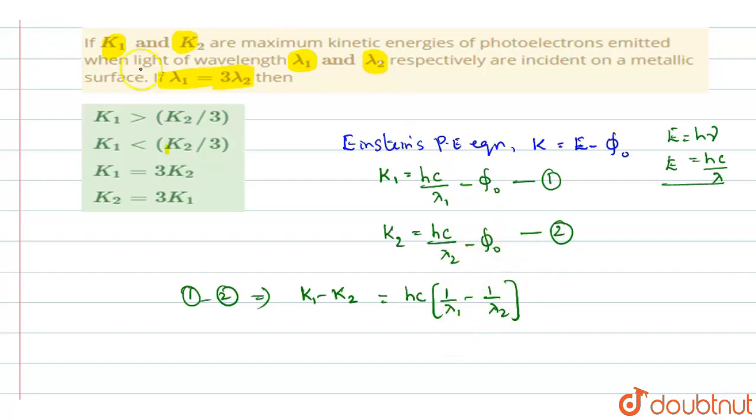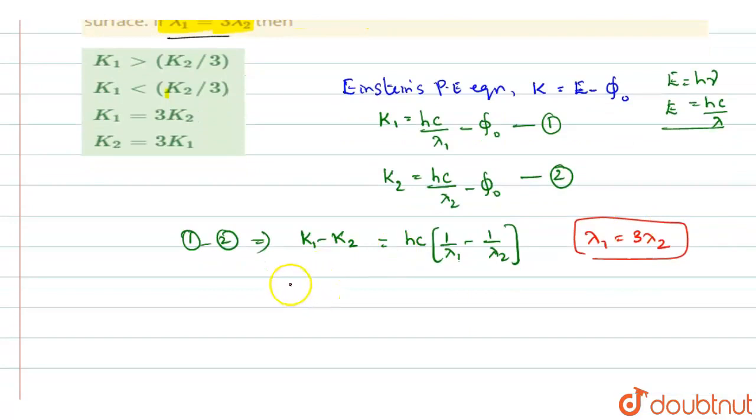Now they have given you one relation, lambda 1 equals 3 lambda 2. So when you use that relation here, we know that lambda 1 is equal to 3 lambda 2. So using this relation here, you get the equation as K1 minus K2 is equal to H C into, in place of lambda 1, we shall substitute 3 lambda 2 minus 1 by lambda 2. Now when you simplify this,